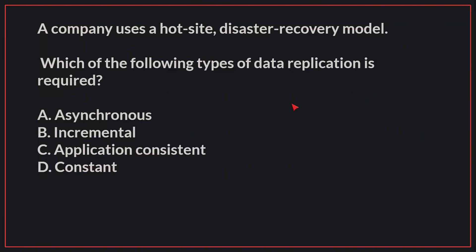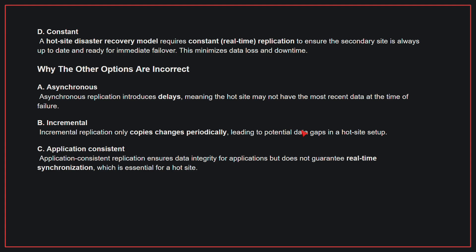A company uses a hot site disaster recovery model. Which of the following types of data replication is required? The correct answer is D, constant. A hot site disaster recovery model requires constant replication to ensure the secondary site is always up-to-date and ready for immediate failover, minimizing data loss and downtime.